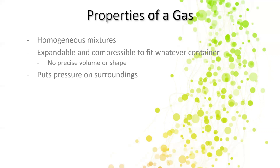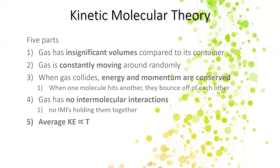The third property is that gas puts pressure on its surroundings. Think about the balloon again — the gas inside the balloon is putting pressure outwards to keep the balloon from caving in on itself. Now we're going to talk about the kinetic molecular theory. There are five principles in this theory that we've learned about, and we're going to go over all of them briefly.